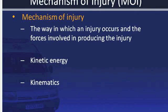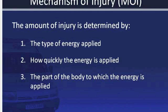Mechanism of Injury refers to the way in which an injury occurs and the forces involved in producing that injury. Kinetic energy is the energy of motion. The amount of kinetic energy an object has depends on the mass, which is the weight, and the speed, which is the velocity of the object. Kinematics is the science of analyzing the mechanism of injury and predicting injury patterns. The amount of an injury is determined by the type of energy applied, how quickly the energy is applied, and to what part of the body the energy is applied.